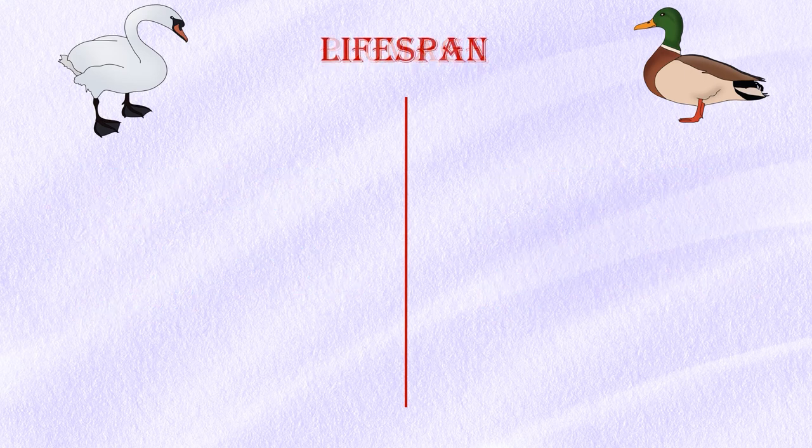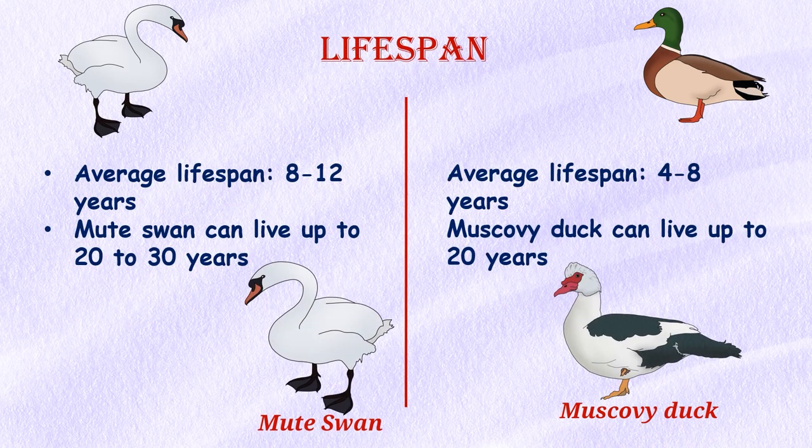Lifespan: The average swan lives 8 to 12 years, but mute swans are long-lived, as much as 20 to 30 years. Wild ducks live 4 to 8 years on average, but with proper care, domesticated Muscovy ducks can also live to be 20 years old.